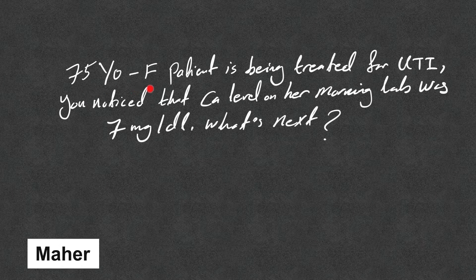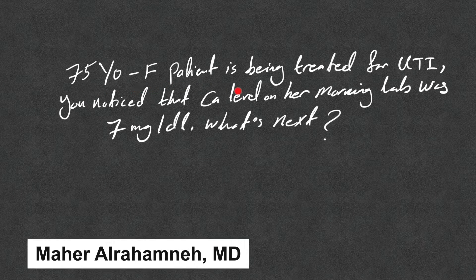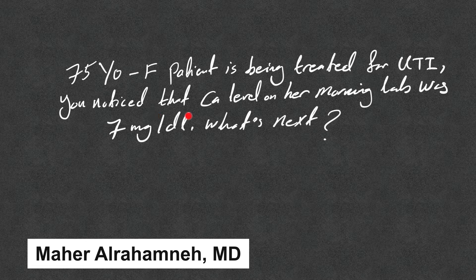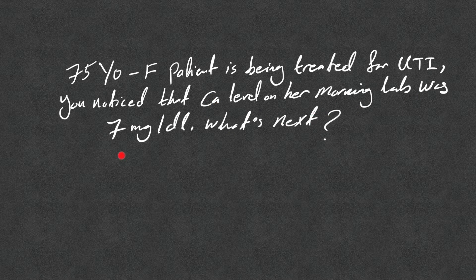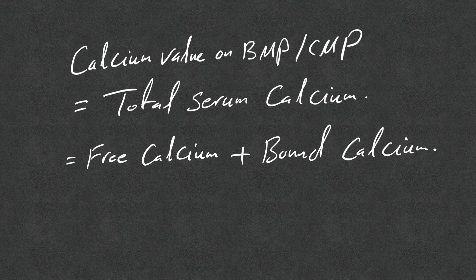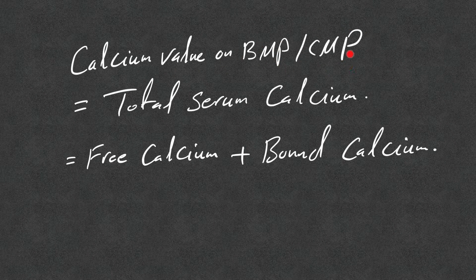A 75-year-old lady is being treated for UTI, and you notice that her calcium level on her morning lab was 7 mg per deciliter. What's next? The calcium value on BMP (basic metabolic panel) or CMP (complete metabolic panel) is actually the total serum calcium.